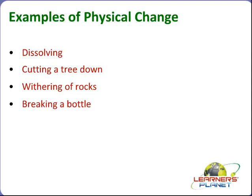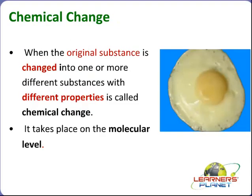Another example is weathering of rocks — rocks are broken into very small pieces. Does the chemical nature of rock change? No, the chemical nature of rock remains the same, so it is again a physical change. Breaking a bottle is similar to crushing a can — if you break a bottle, there is no change in composition, only the shape changes. So this is all about physical change.